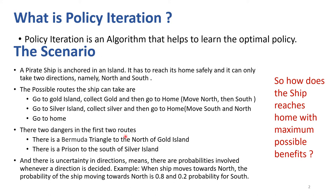The ship can also go straight home. There are two dangers involved in the first two routes. Near the gold island there is a Bermuda triangle, so there's a possibility of getting stuck there. If it opts to go to the silver island, it can get stuck in a prison. These are the two dangers, which may or may not be encountered. We want to find the best directions at each time step so the ship can reach home safely with maximum possible benefits.